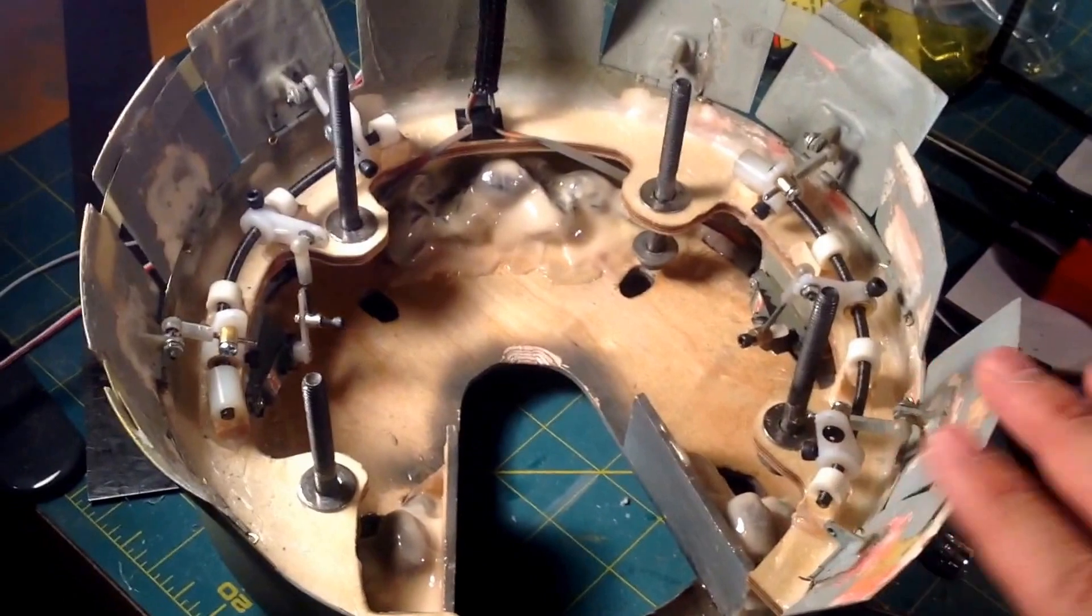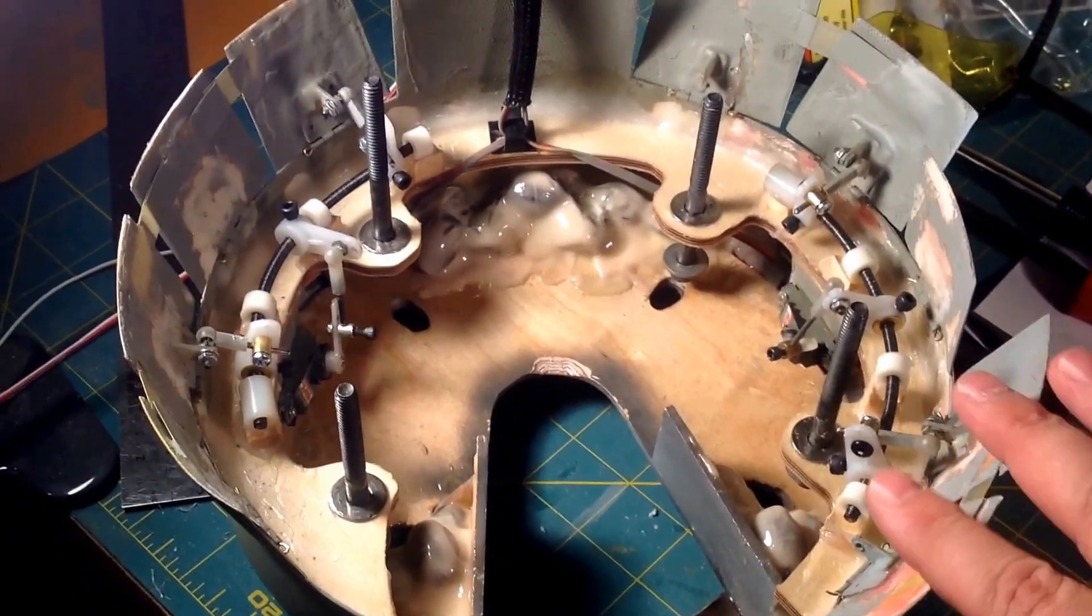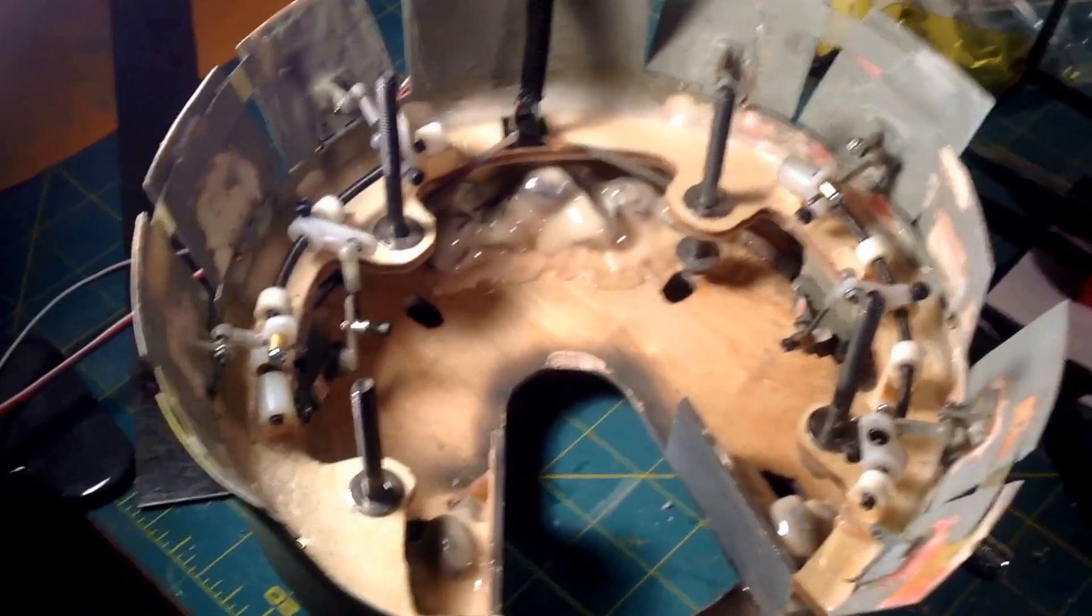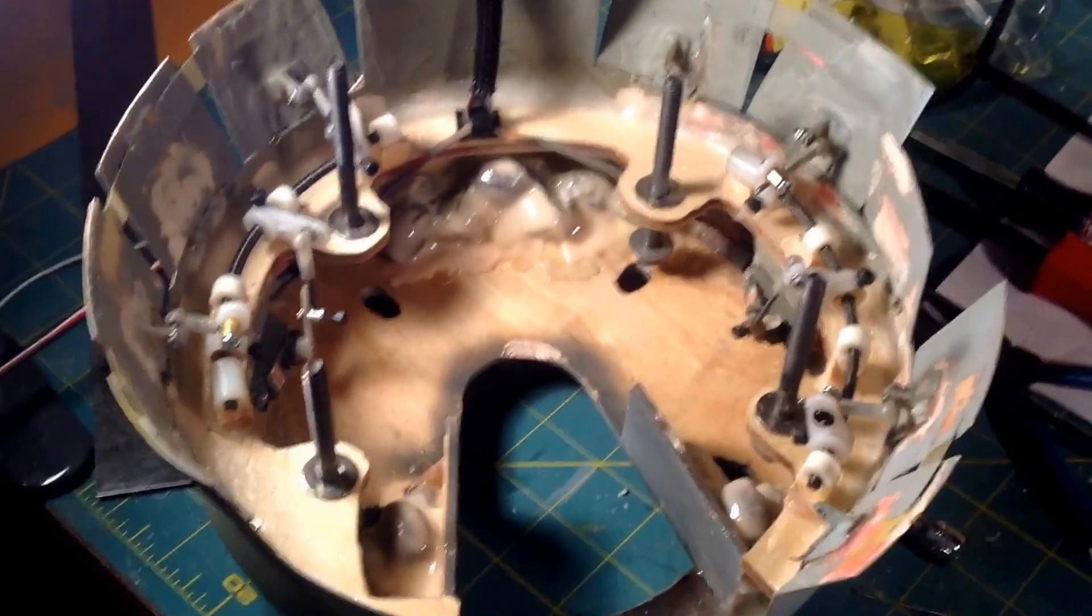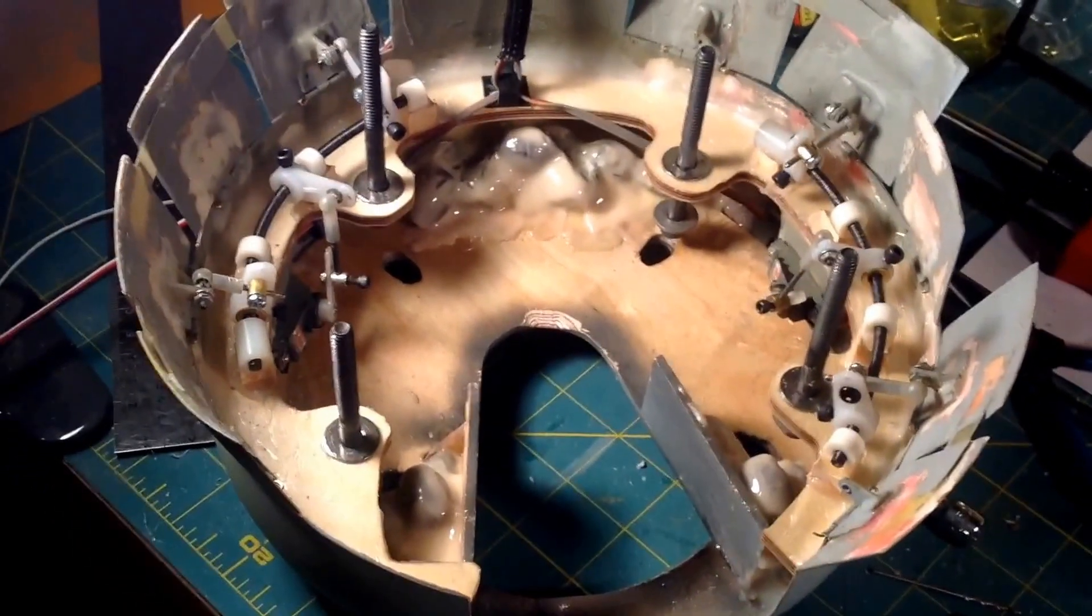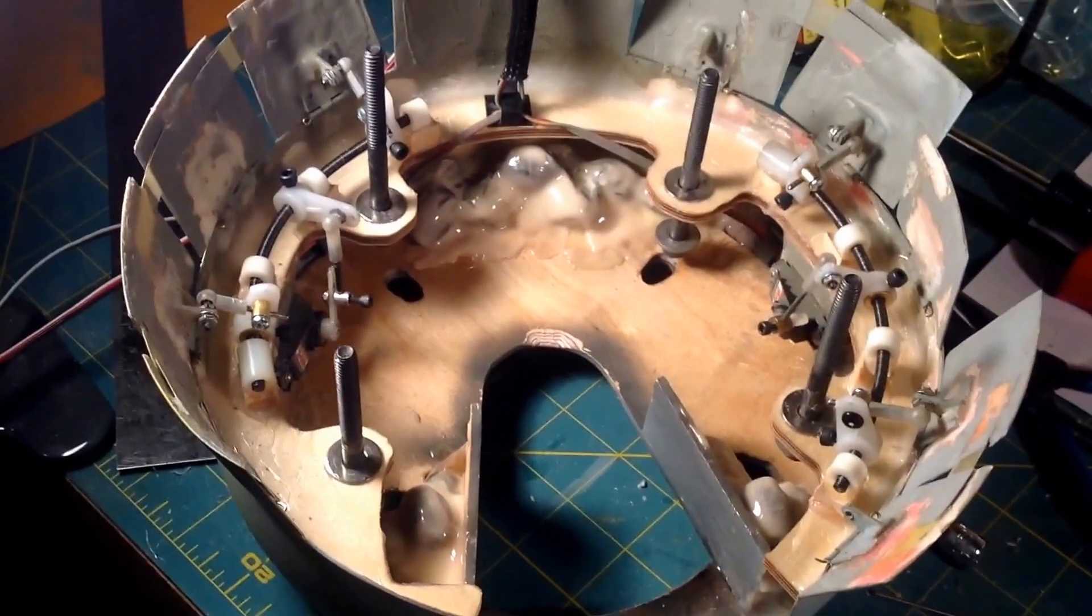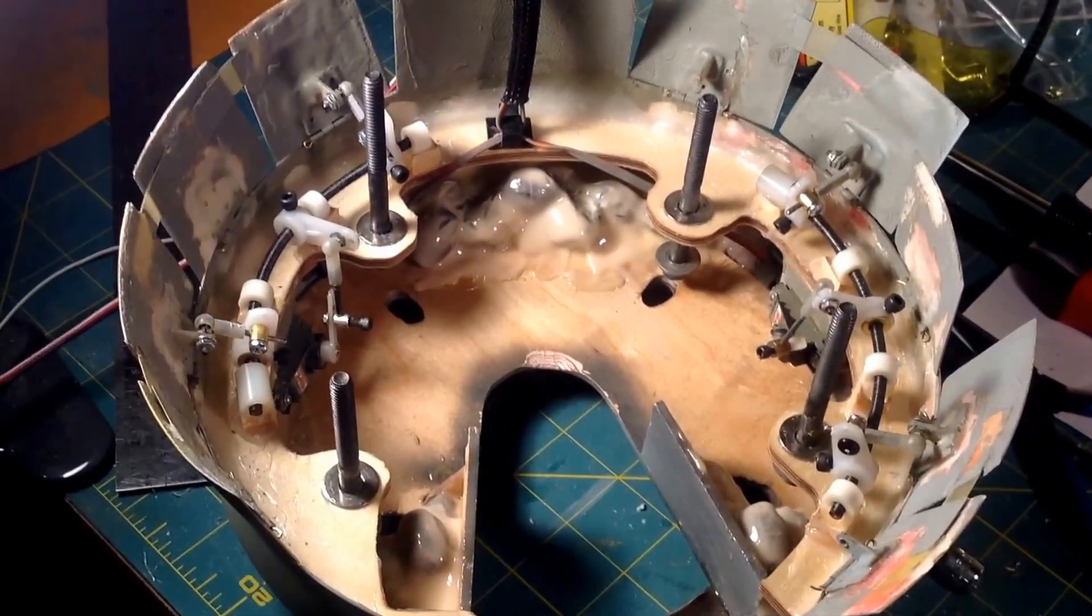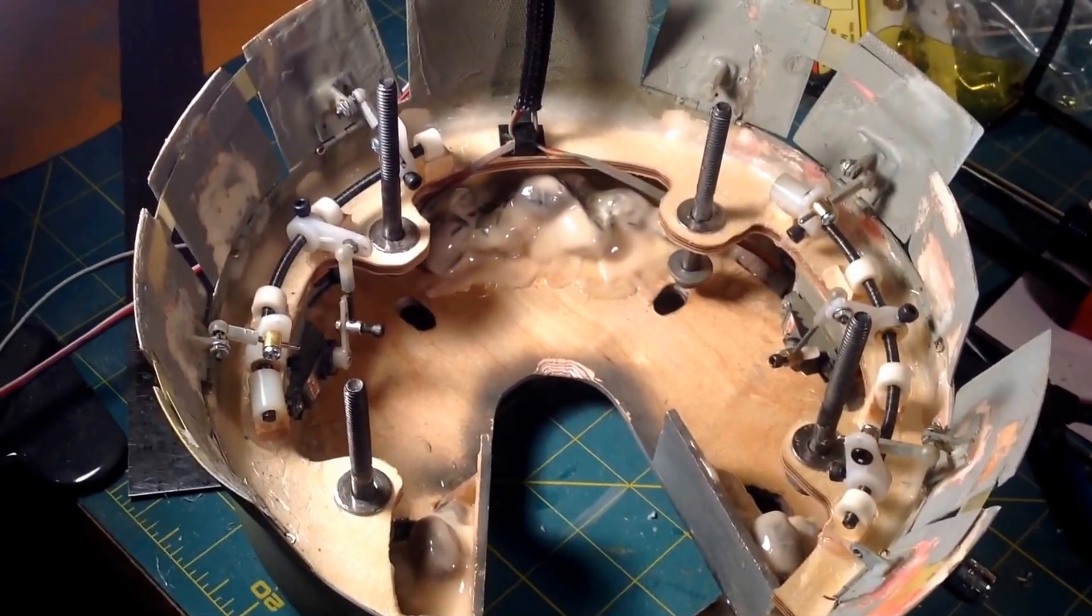So just like on the real plane, the cowl flaps will open. On the full size, they were hooked up so that they were thermostatically controlled or manually controlled. But for my purposes, since I ran out of channels, well, I just hooked it up to the throttle and it seems to work pretty good. And I haven't had any overheating issues.